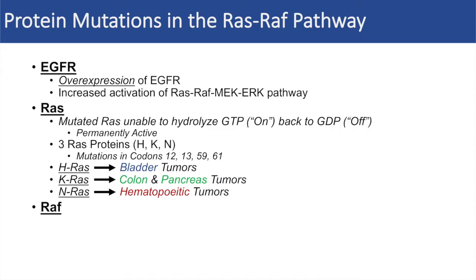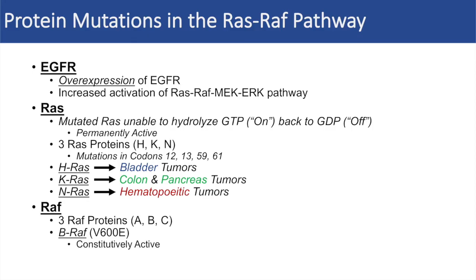For the RAF proteins, there are actually three RAF proteins — A, B, and C — but probably the most important one to know about is the mutation in BRAF, which is a point mutation at V600E, a valine-to-glutamate change. This leads to a constitutively active form of BRAF when this point mutation occurs.